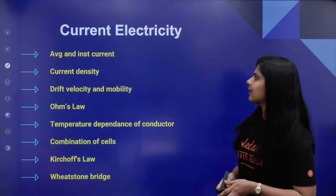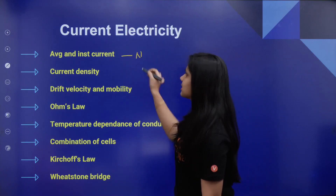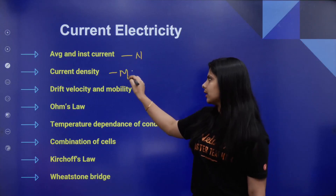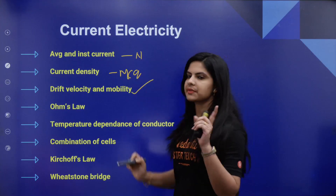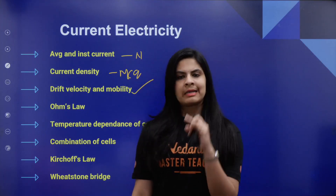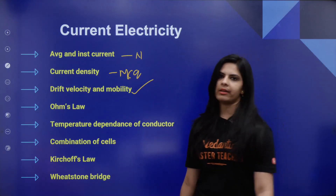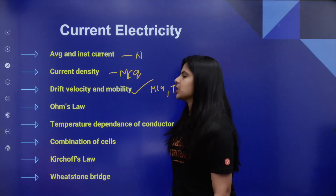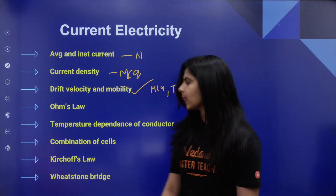Next is Current Electricity. First, average and instantaneous current — numericals. Current density — MCQs. Drift velocity and mobility are very important. MCQs, theory-based questions, derivations, and numericals — drift velocity covers all question types.